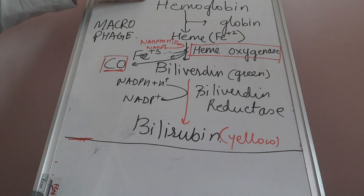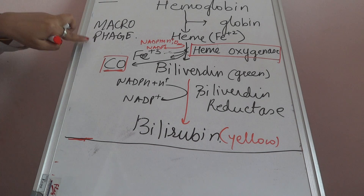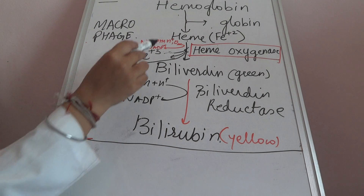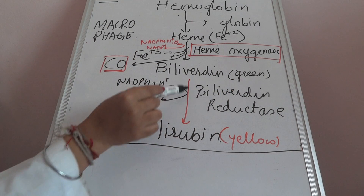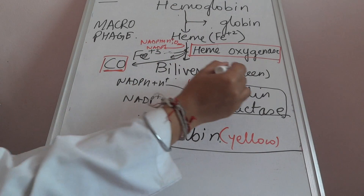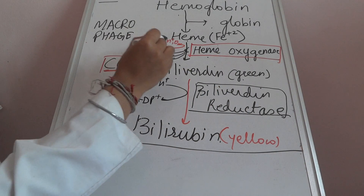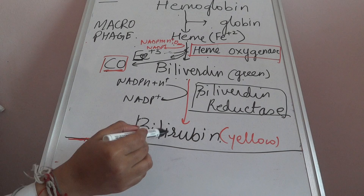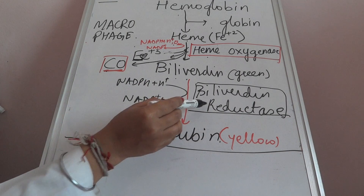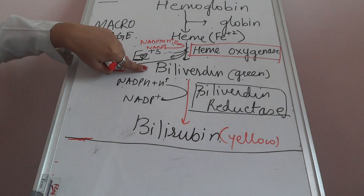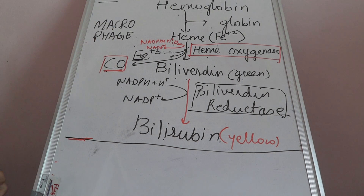Hemoglobin is broken down to bilirubin in the macrophage. First, hemoglobin gets broken down to heme and globin. Heme forms biliverdin, a green colour pigment, in the presence of heme oxygenase, utilising NADPH and oxygen, releasing ferric iron and carbon monoxide. Biliverdin then forms bilirubin, a yellow colour pigment, in the presence of bilirubin reductase and NADPH + H⁺. In biliverdin, methanol bridges between ring A and B are broken down, and in bilirubin, the methanol bridge between ring C and D is reduced to methylene groups.